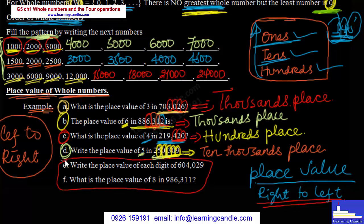Write the place value of each digit — zero, digits, zero, six digits.